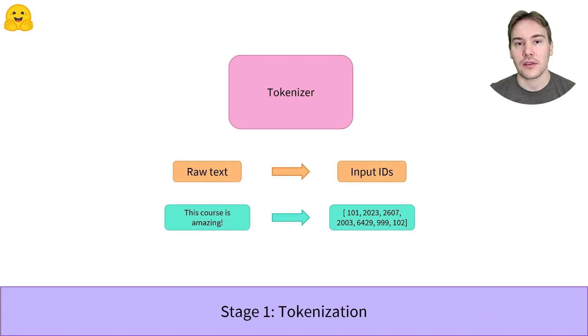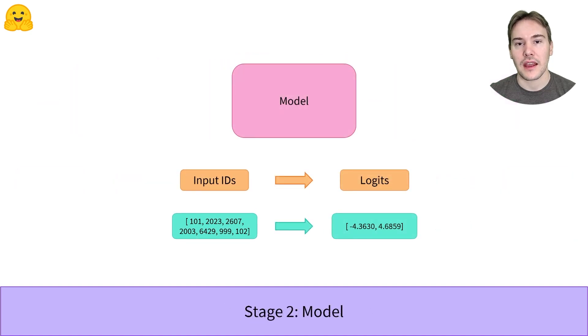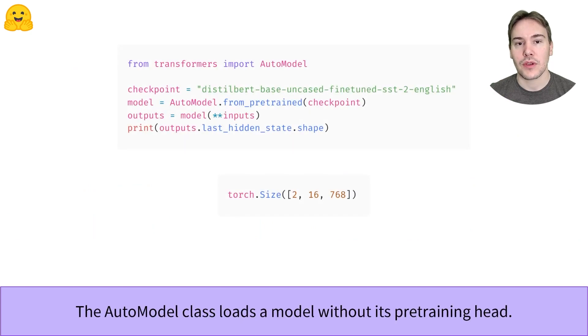Now let's have a look at the second step, the model. As for the tokenizer, there is an AutoModel API with a from_pretrained method. It will download and cache the configuration of the model as well as the pretrained weights. However, the AutoModel API will only instantiate the body of the model.